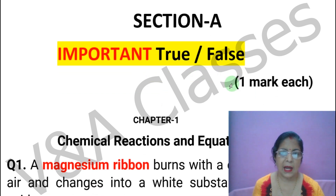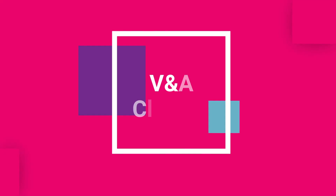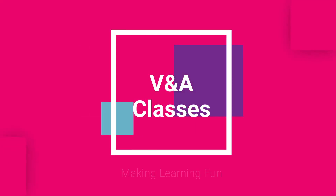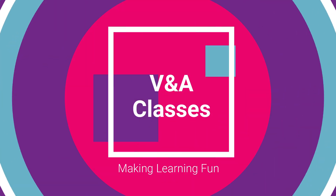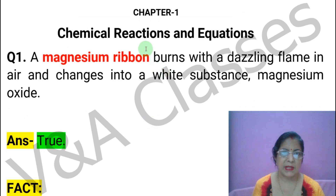For each true-false, you will get one mark. Let's start this video from Chapter 1: Chemical Reactions and Equations.